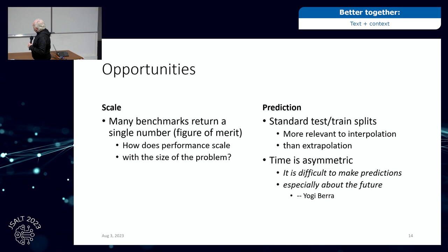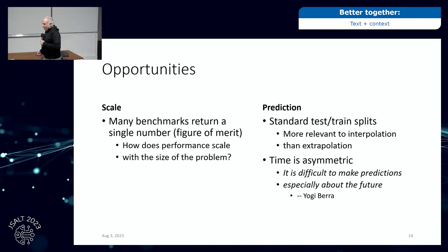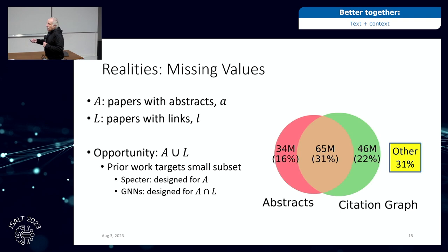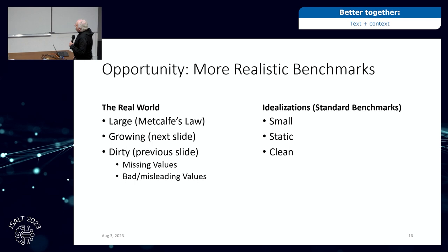Many benchmarks focus on a single point — a single figure of merit at a single point. I want to know what goes on over a curve. How do these things scale with the size of the problem, and how do they scale with how much I'm trying to forecast? Forecasting is hard, and forecasting farther into the future is harder than forecasting a little in the future. Missing values: lots of these systems tend to focus on the intersection. Prior work like Specter is designed for the area where you have abstracts. We need to come up with solutions to deal with the union.